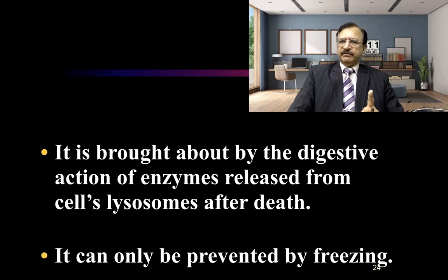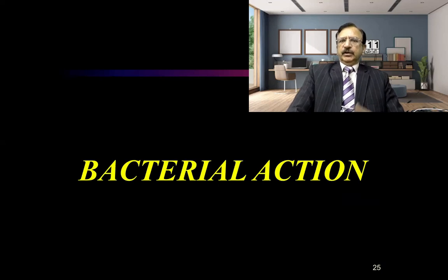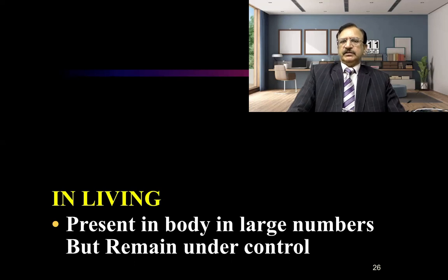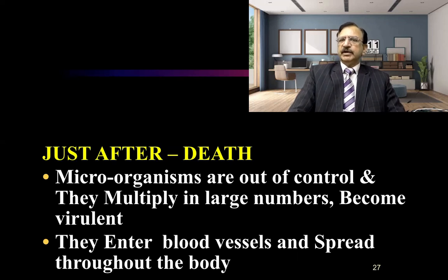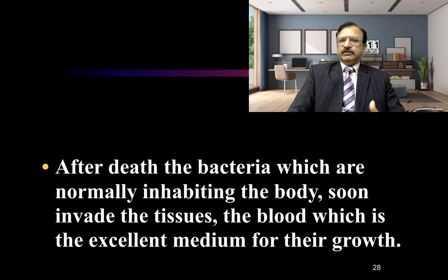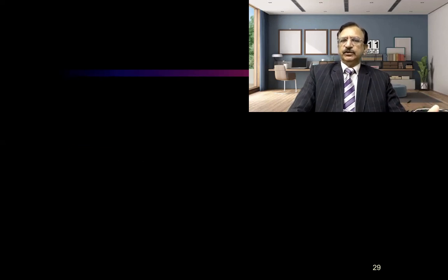Autolysis can only be prevented if you keep the body in freezing, at minus 20 degrees temperature. The second process is bacterial action. In the living body, bacteria are kept under control by defensive mechanisms, but after death these microorganisms are out of control — they multiply in large numbers, become virulent, enter the bloodstream, and spread throughout the body. Blood is the best medium for them to multiply and travel, and bacteria normally inhabiting the body soon invade the tissues.